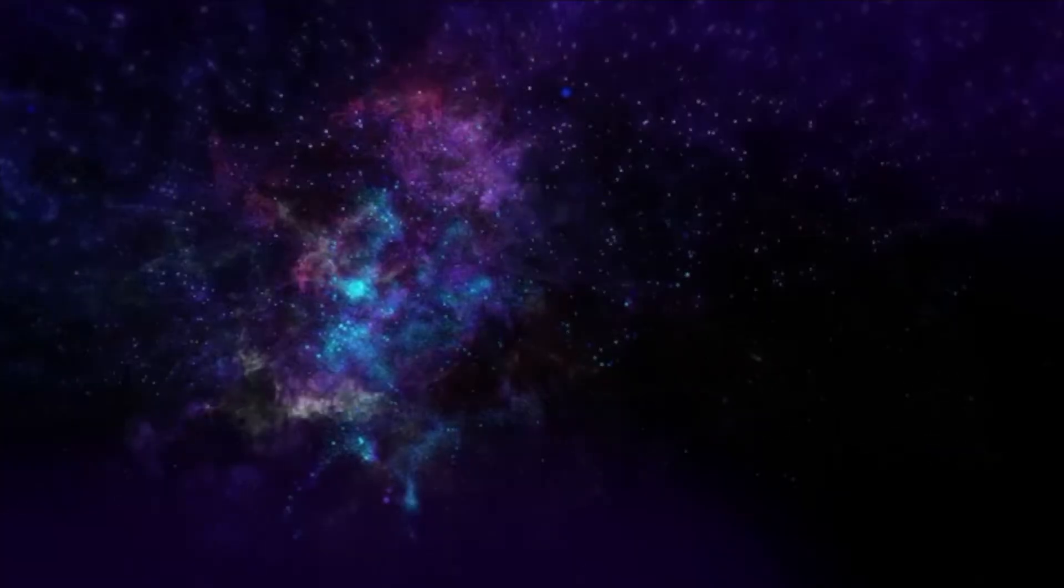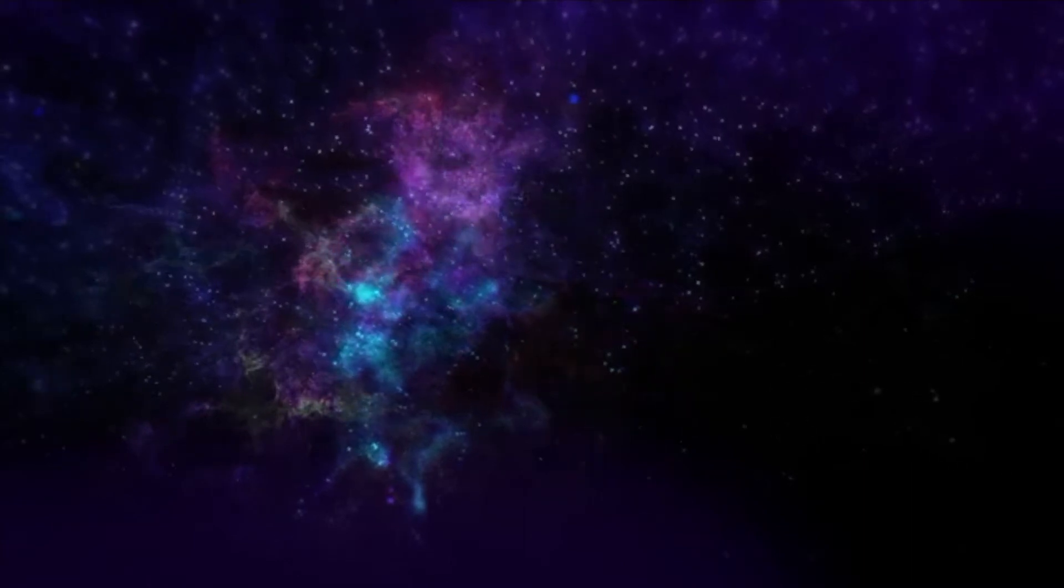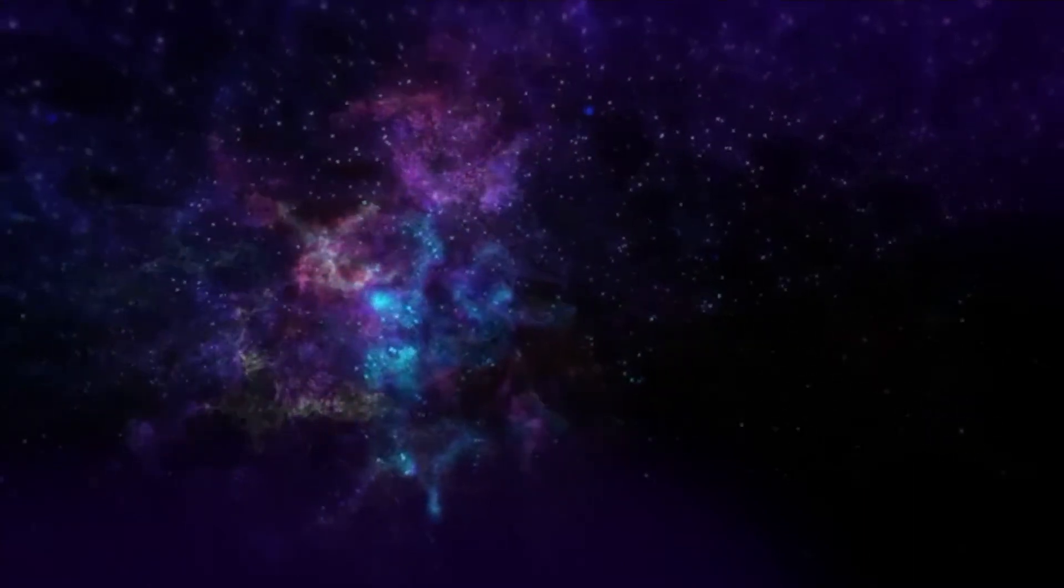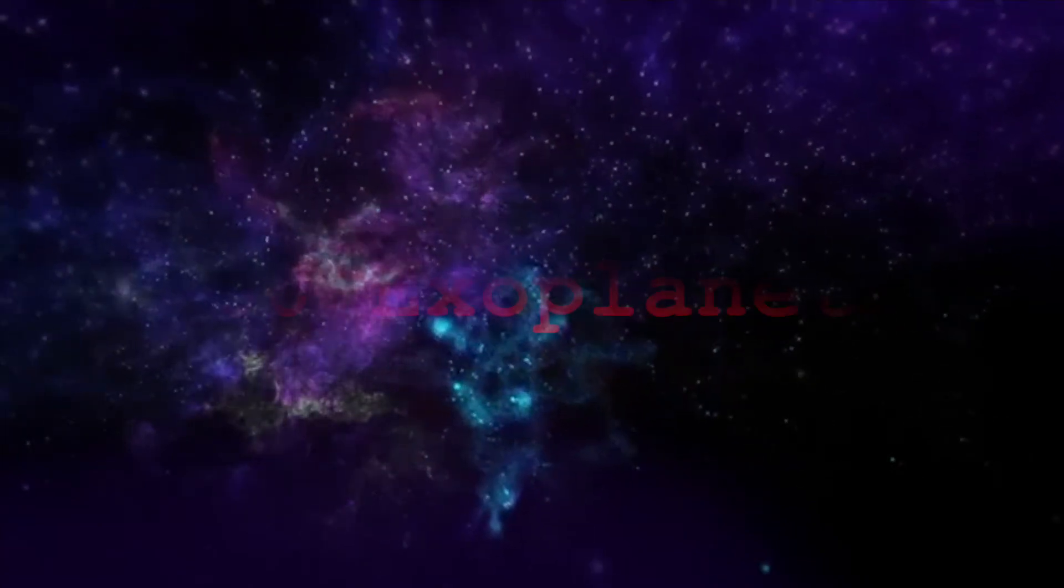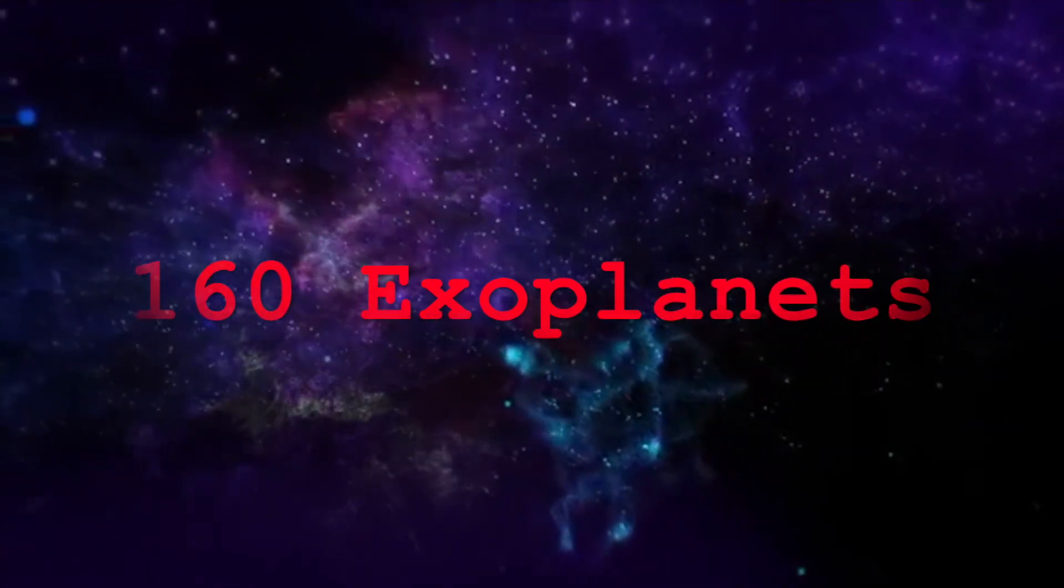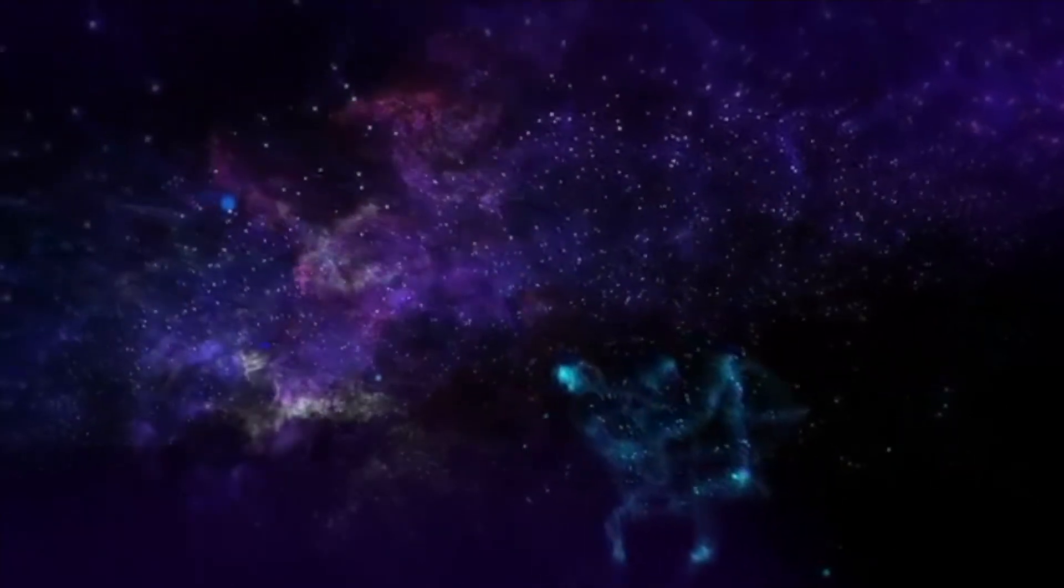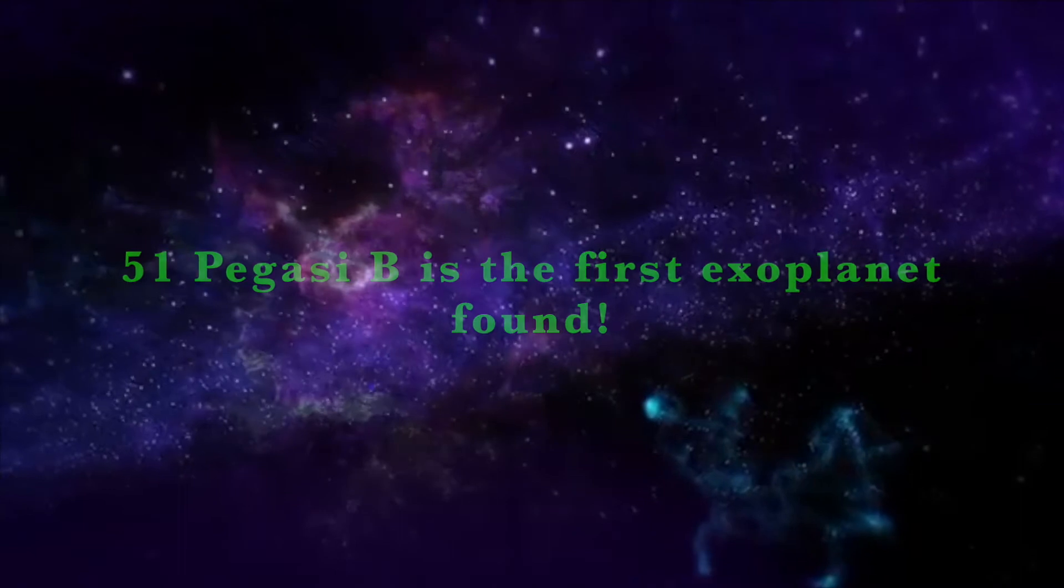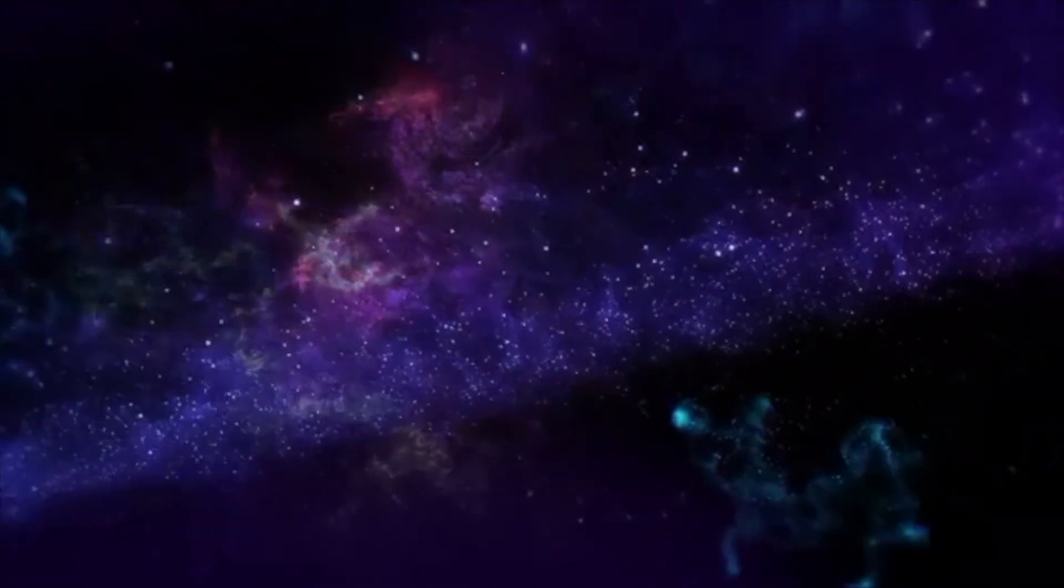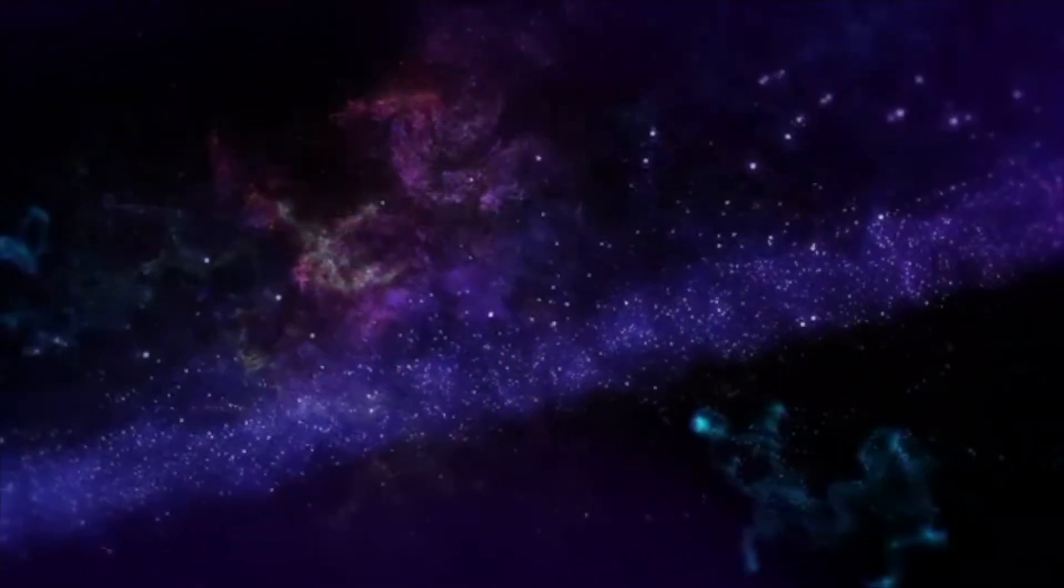But stars like the sun and Kepler-160 are more stable and suitable for the evolution of life. Altogether, 160 exoplanets have been found since the first was discovered in 1995, 51 Pegasi b that we already talked about, but all of them have been very different to those found in our solar system.